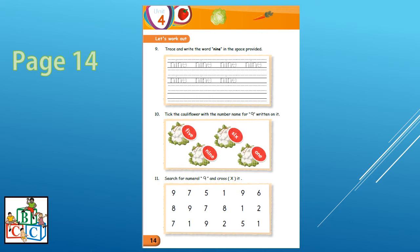So you are going to write the word 9 for me in your copy book. And do not forget to mention the page number before starting. Number 10. Number 10. Tick the cauliflower with the number name for 9 written on it. So let us spell the number word 9. N-I-N-E nine.